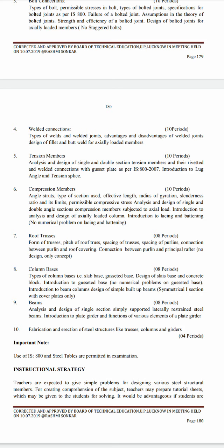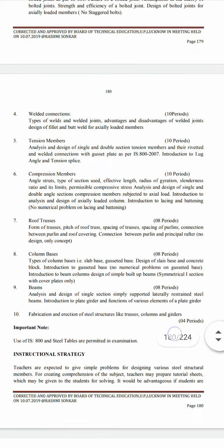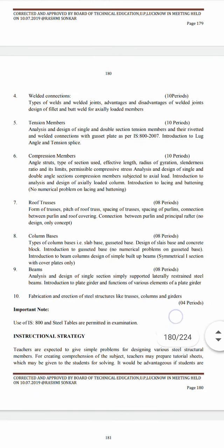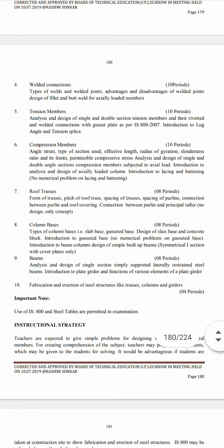For welded connections: types of welds and welded joints, advantages and disadvantages of welded joints, and design of fillet and butt welds for axially loaded members. Next, tension members: analysis and design of single and double section tension members and their riveted and welded connections with gusset plates as per IS 800:2007, introduction to lug angle and tension splice.